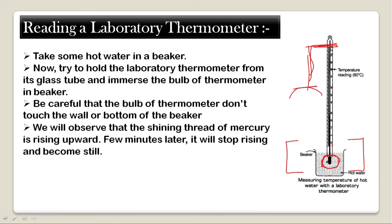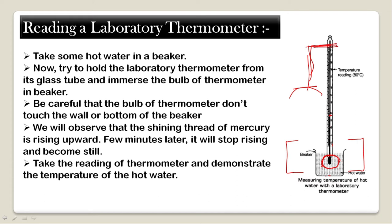We will observe that the shining thread of mercury is rising upward. A few minutes later, it will stop rising and become still. We then take the reading of the thermometer to determine the temperature of the hot water. Wherever the mercury stops moving or rising, we will take the reading from there.